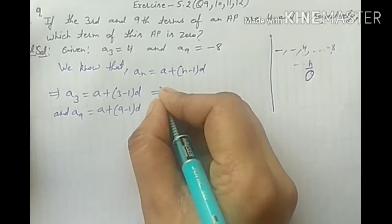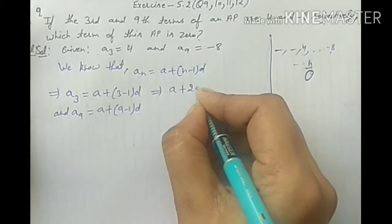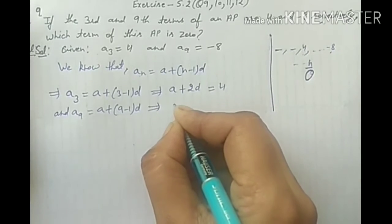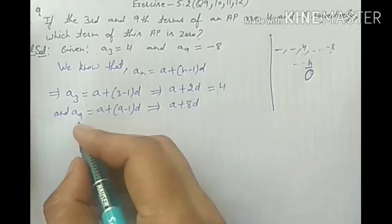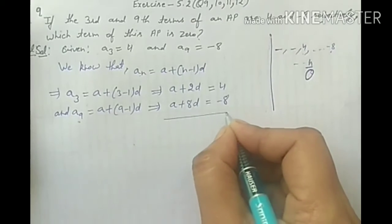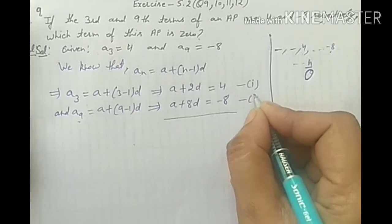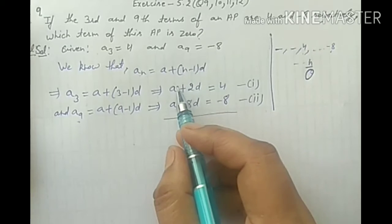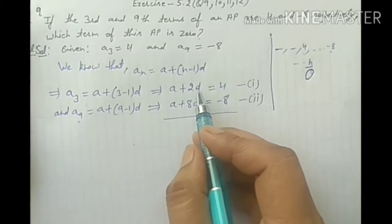अब ध्यान से देखें। From this, A plus 2D is equal to 4, and A plus 8D is equal to minus 8. अब हमारे पास दो equations बन गई हैं - linear equations, क्योंकि इनकी degree 1 है। कितने variables हैं? 2 - first A and second D. So linear equations in two variables.